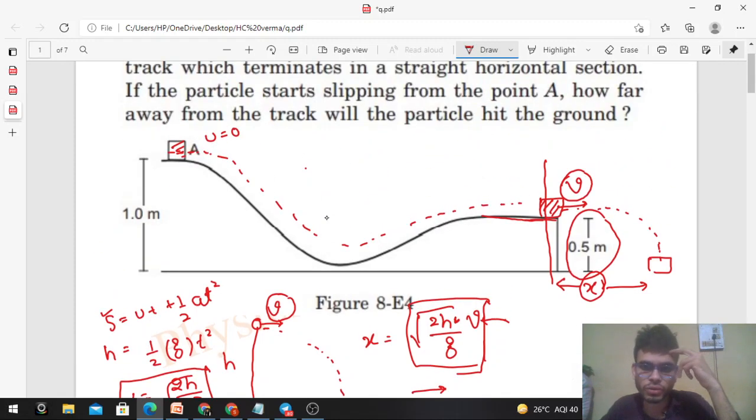Simply apply work energy theorem when the particle is moving from point A to the end of the track. This is your initial position and this is your final position. It says work done by all the forces equals change in kinetic energy. How many forces will be there on this particle? Its weight mg and normal reaction acting perpendicular to the track.